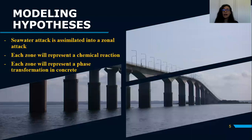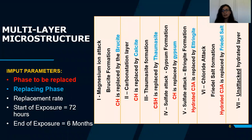The hypothesis for the model is the following: the seawater attack is assimilated into a zonal attack, so a multi-layer model is used. Each layer or zone will represent a chemical reaction and a phase transformation in concrete. The multi-layer microstructure has six layers with six equations and six reactions, plus a seventh unattacked hydrated layer.